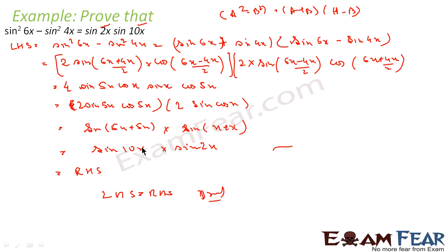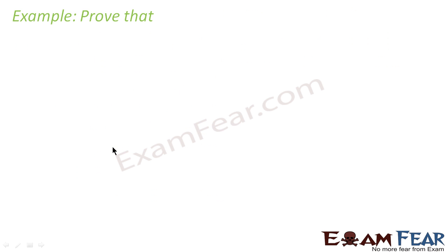So what have we done? The expression was in the form of a squared minus b squared, so we used a squared minus b squared equals a plus b into a minus b. Then we used the formula sin A plus sin B equals 2 sin(A+B)/2 into cos(A-B)/2, and we got the answer.